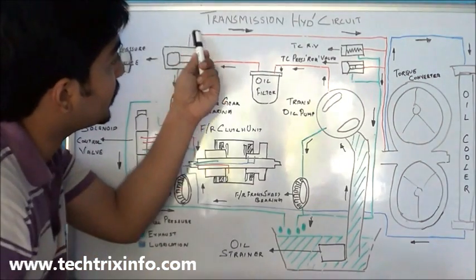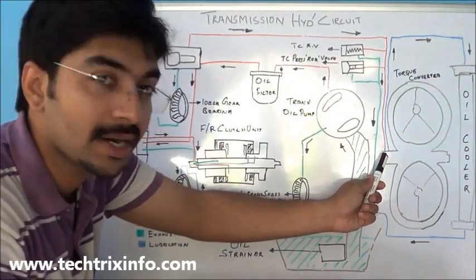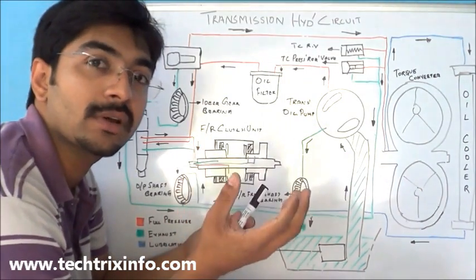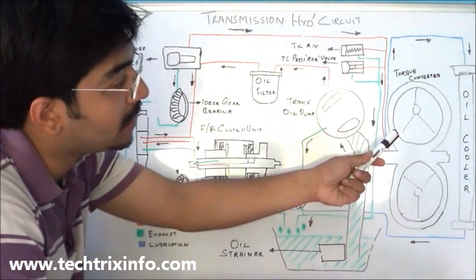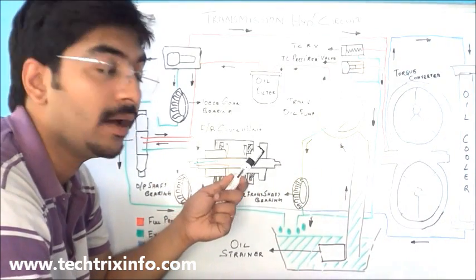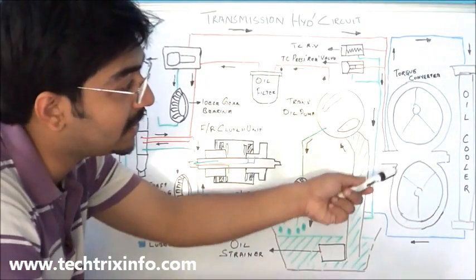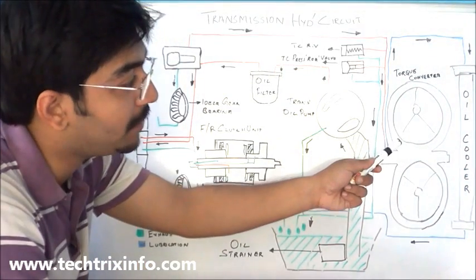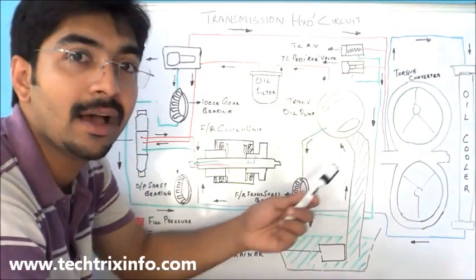One line goes towards the torque converter — you can see this line comes and reaches the torque converter. This line supplies pressurized transmission oil to the torque converter for its functioning. The torque converter actually replaces a clutch; it multiplies the torque, and from the torque converter the drive reaches the transmission. The power produced by the engine is taken by the torque converter, which supplies that energy towards the gearbox. Since it is a fluid coupling, transmission oil is the fluid used inside the torque converter.